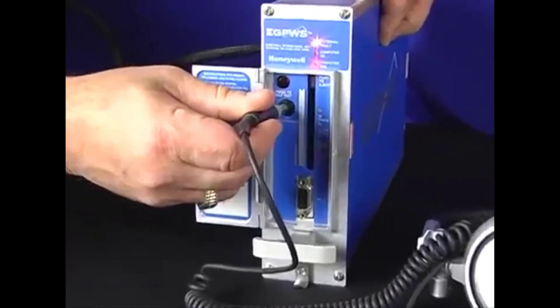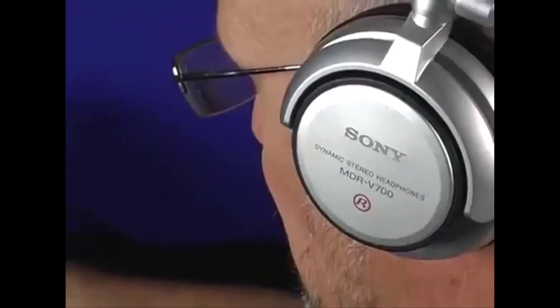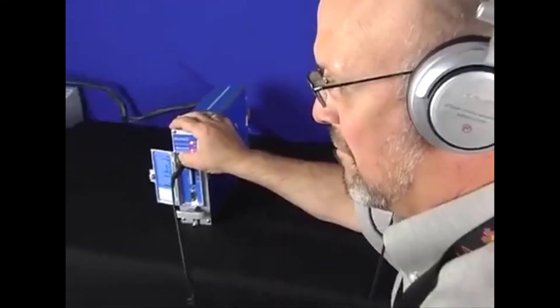Self-test enunciations are heard over the cockpit speaker system or the cockpit interphone system. Mark 5 and Mark 7 systems also have a headphone jack on the front panel of the eGPWC.